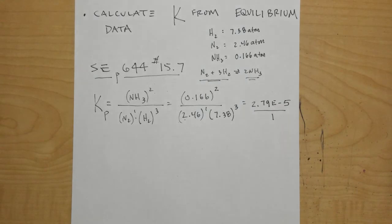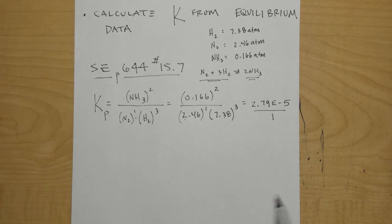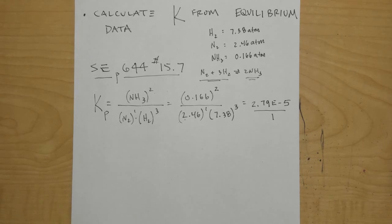Since K is 2.79 × 10⁻⁵, write it over 1 and ask which is bigger — the reactants are larger, so the reaction lies far to the left with lots of reactants and very few products. That's what the equilibrium constant tells us: where the reaction sits and which side is favored. Next week: lots of equilibrium constant problems. Good luck with your equilibrium.